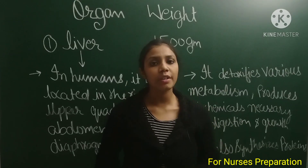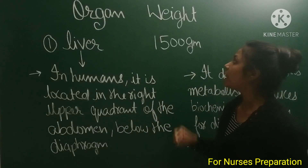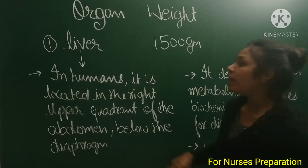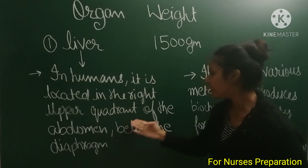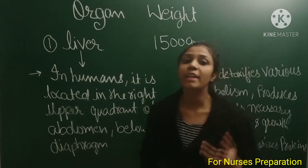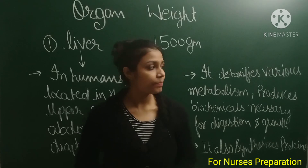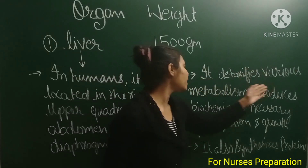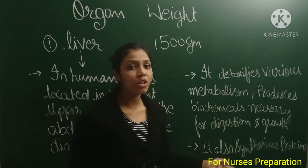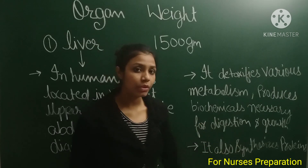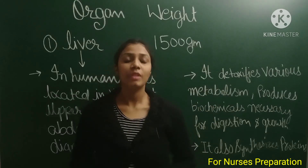Our first organ is the liver. The liver weighs 1500 grams. In humans, it is located in the right upper quadrant of the abdomen, below the diaphragm. Liver functions involve detoxifying various metabolites, producing biochemicals necessary for digestion and growth, and synthesizing proteins.